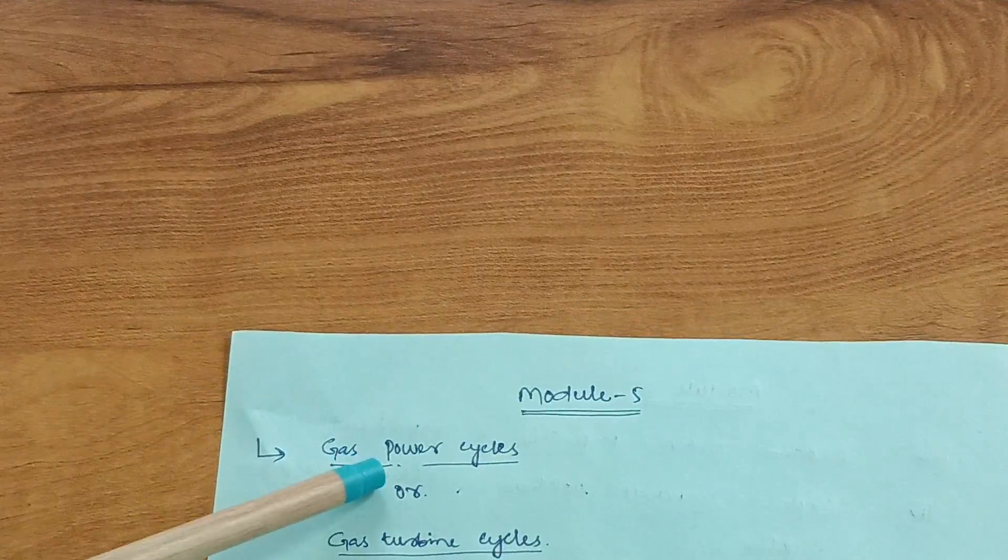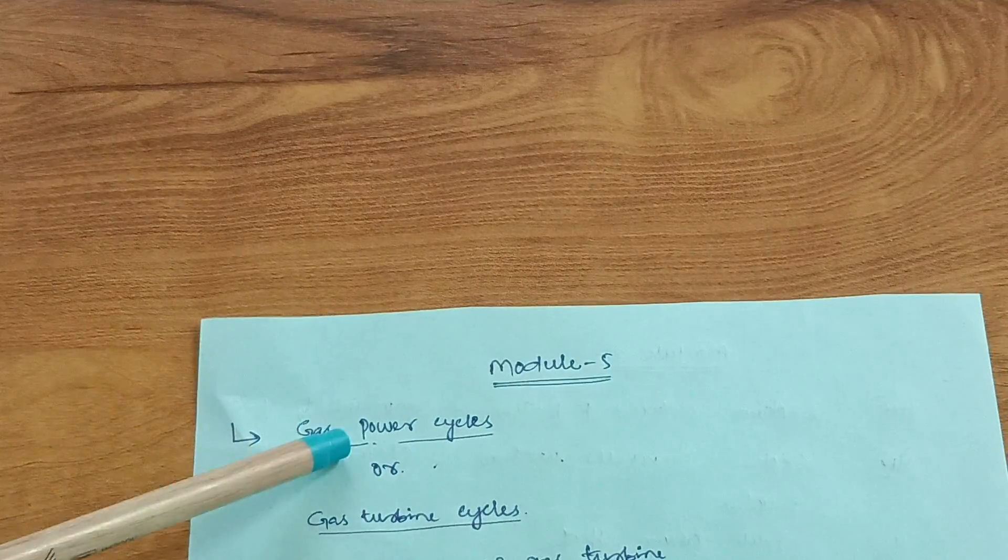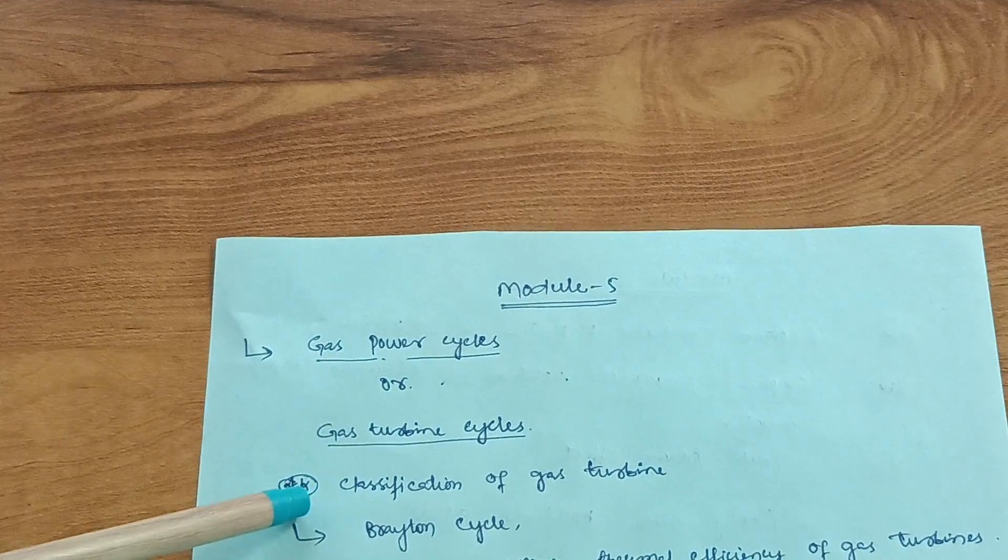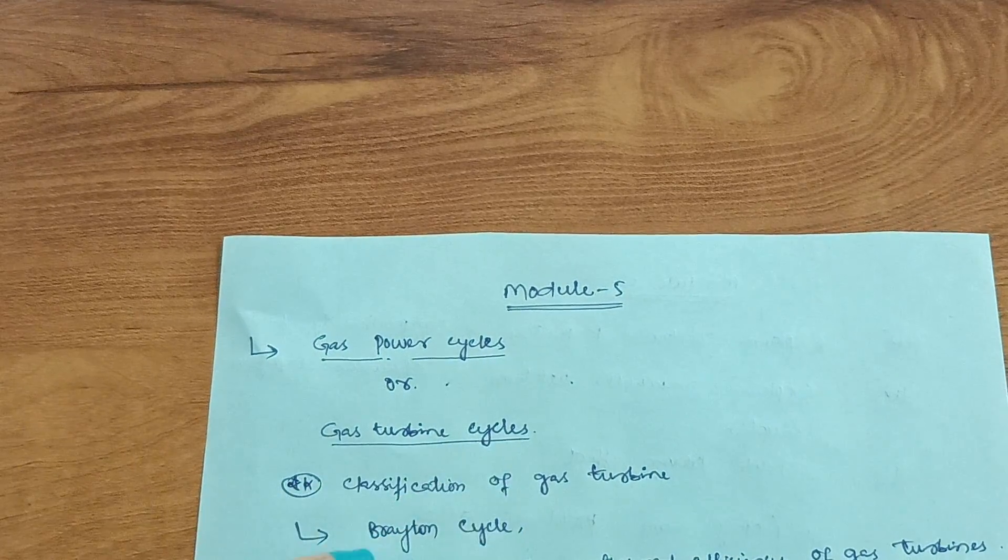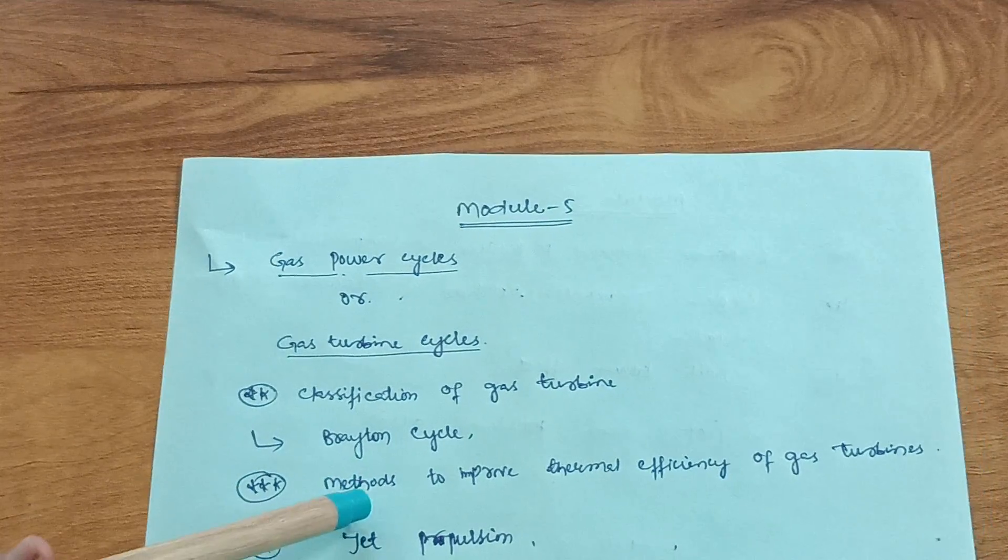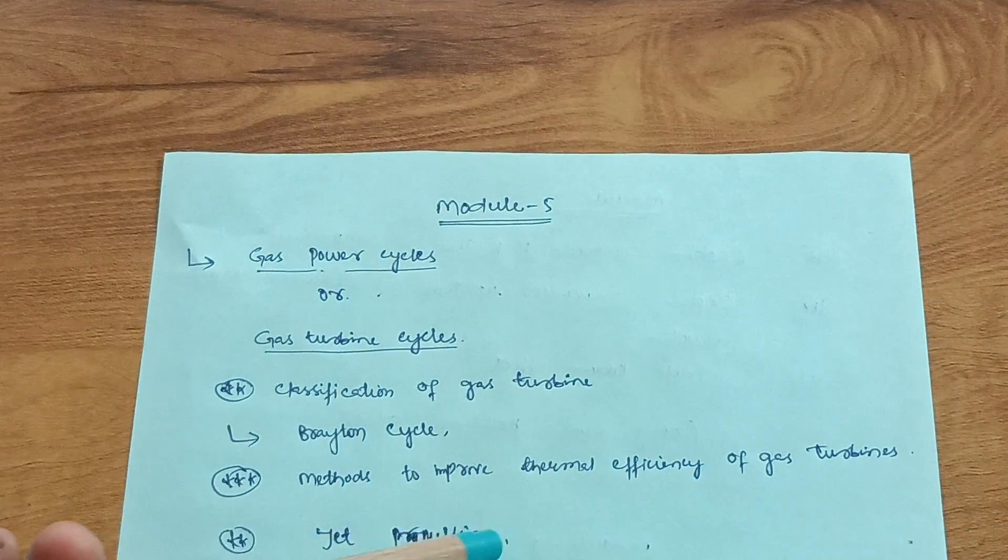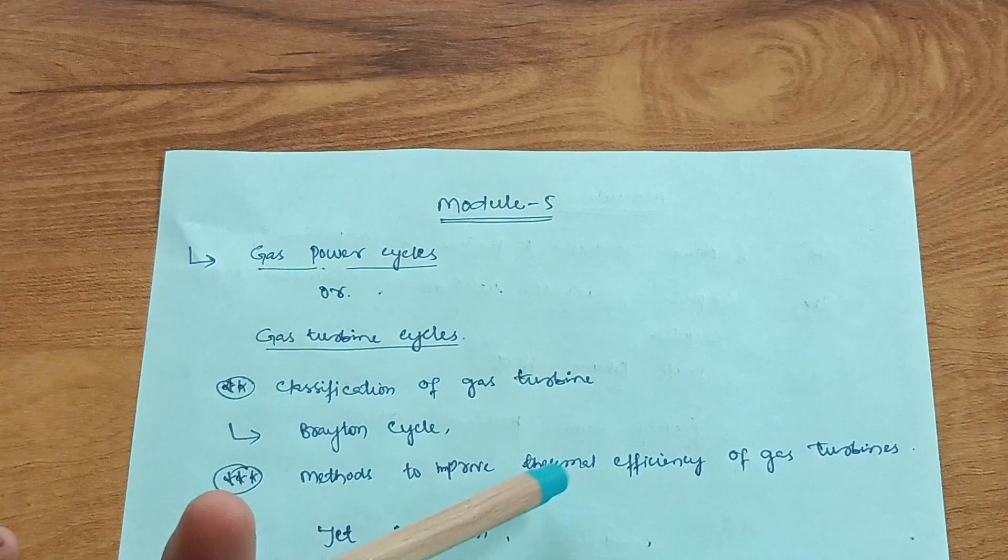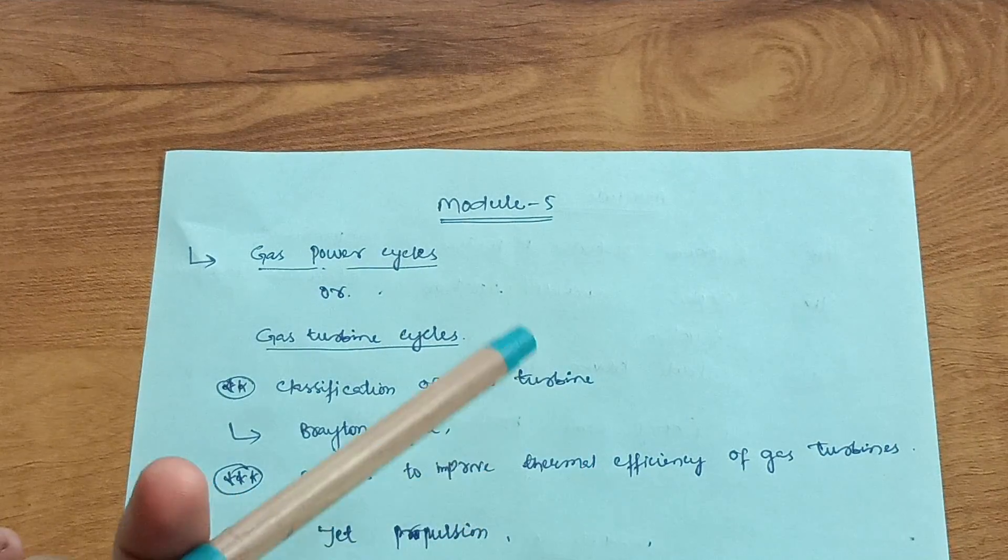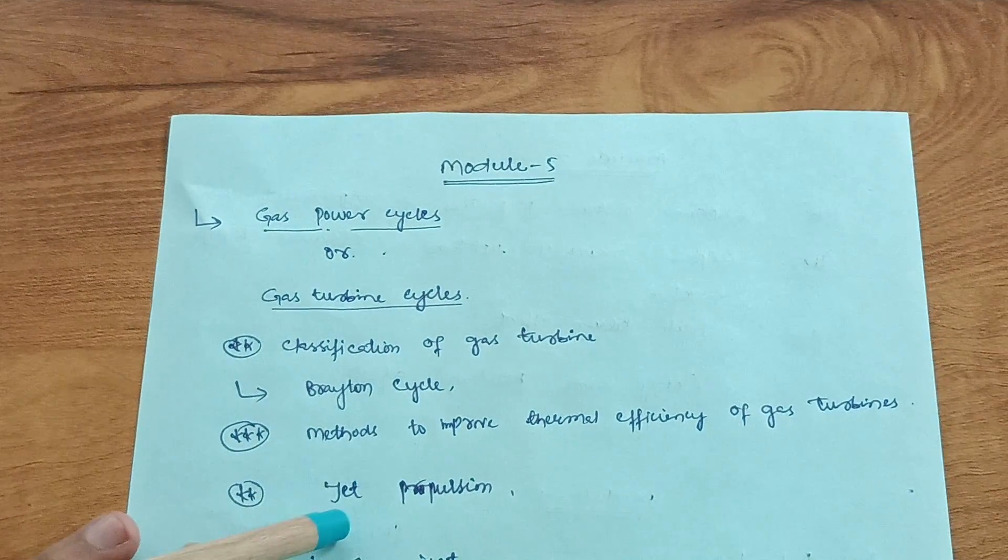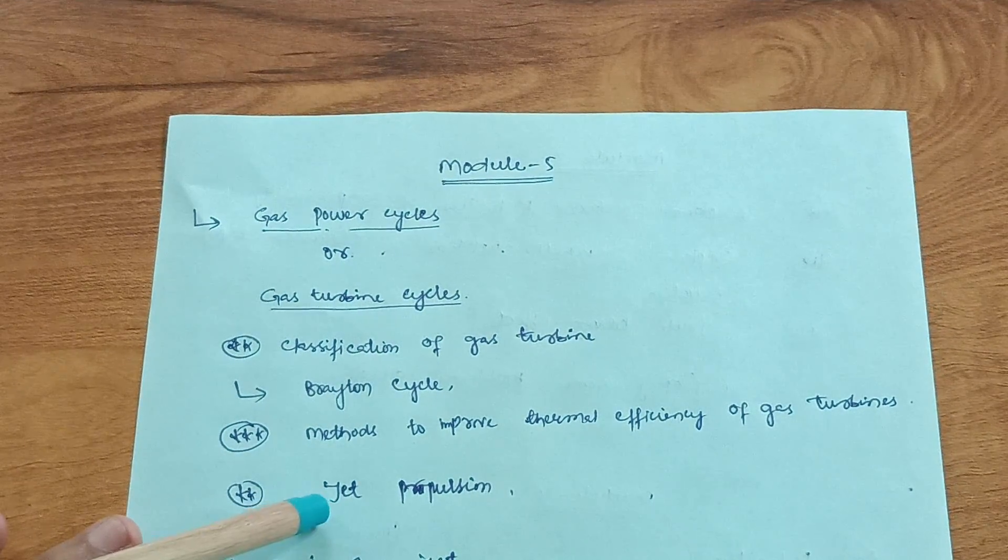Next is Module 5, which also contains two chapters - gas power cycles or gas turbine cycles. First part is classification of gas turbines, which is an important question. Next is Brayton cycle and methods to improve thermal efficiency of gas turbines. This is the most important question, like intercooling and other methods.